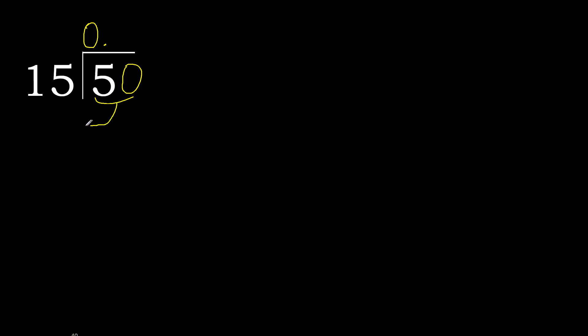50 is not less, therefore work with 50. 15 multiplied by which number is nearest to 50 but not greater? 15 multiplied by 6 is 90 — too great. 15 multiplied by 4 is 60 — still greater. Multiply by 3: 45, which is not greater. So 50 minus 45 is 5.